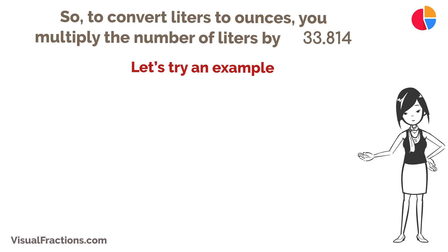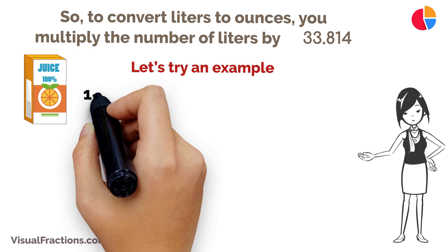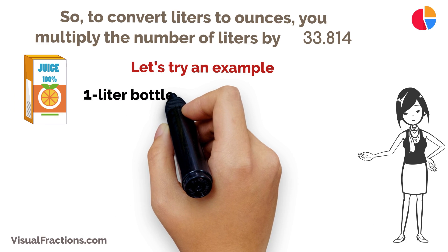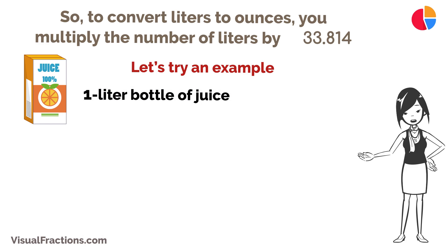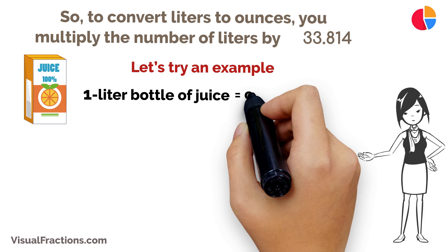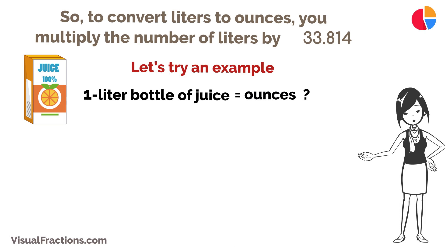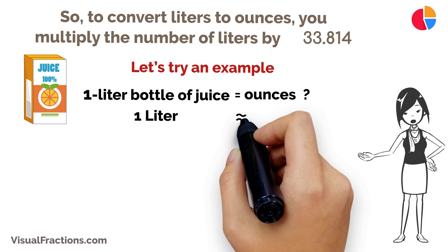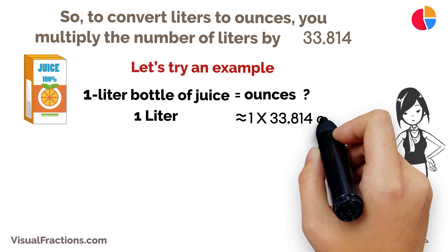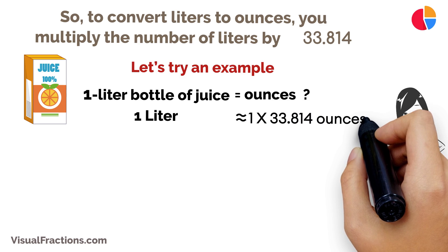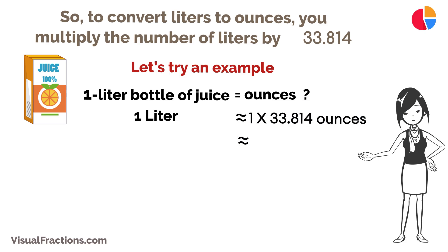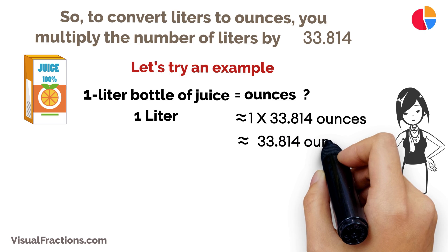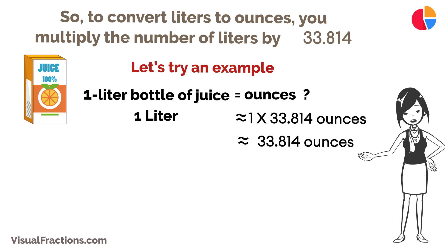Let's try an example. If you have a one liter bottle of juice and you need to know how many ounces that is, just multiply one liter by 33.814. That gives you 33.814 ounces.